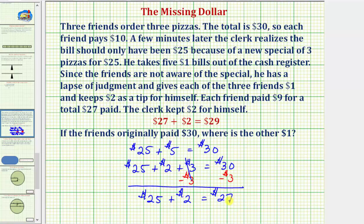So this equation here shows us there's no missing dollar. The pizzas cost $25, but they also paid a tip, unknowingly, to the clerk of the two dollars. And therefore they paid a total of $27 or $9 each. So again, of the $27 they paid, $25 was for the pizzas and this $2 was the tip to the clerk. So once again, there is no missing dollar.